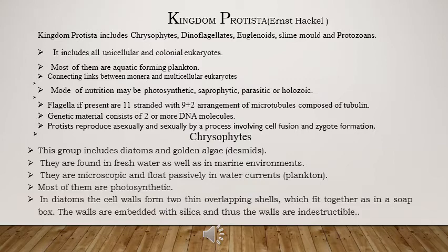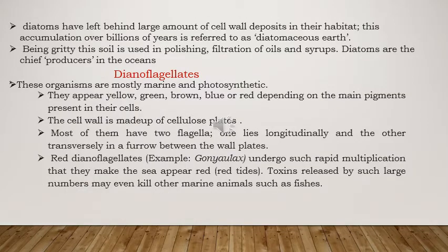A special feature of diatoms is that they have cell walls forming overlapping shells that fit together like a soap box. The wall is embedded with silica and is indestructible — cannot be broken down easily. These diatoms leave behind a large amount of cell wall deposits on their habitat. After accumulation over billions of years, the earth where these cell walls get deposited is known as diatomaceous earth. It is gritty and sparkly in nature due to the silica content.